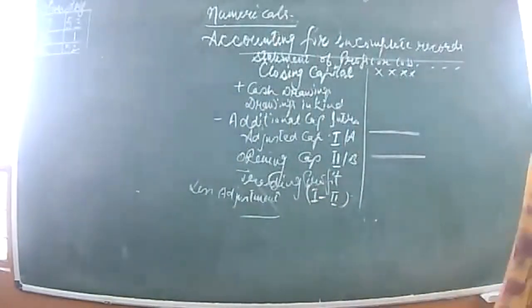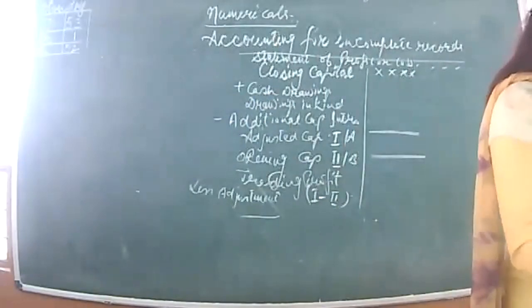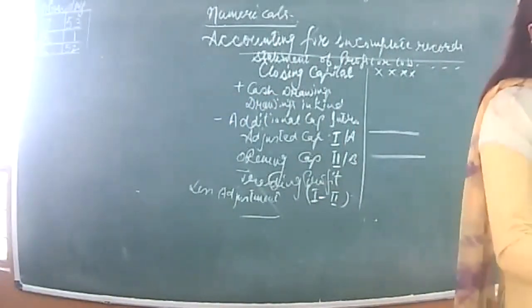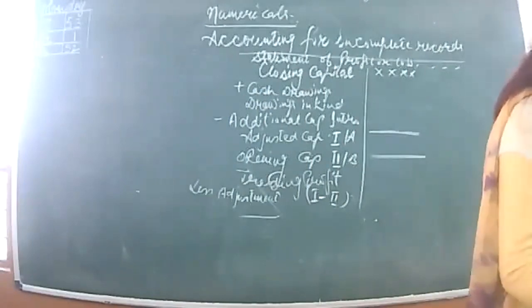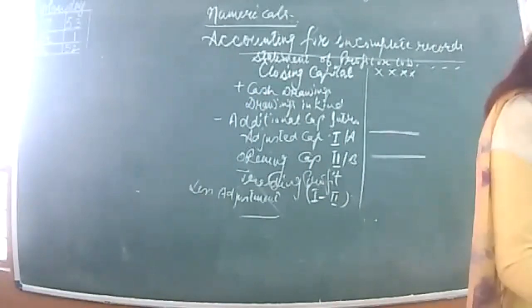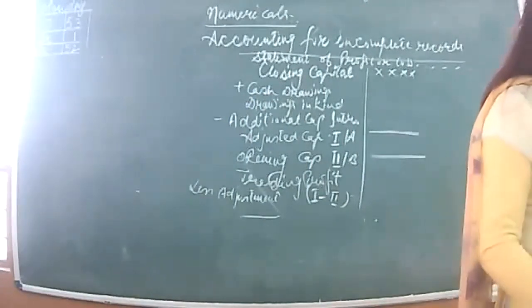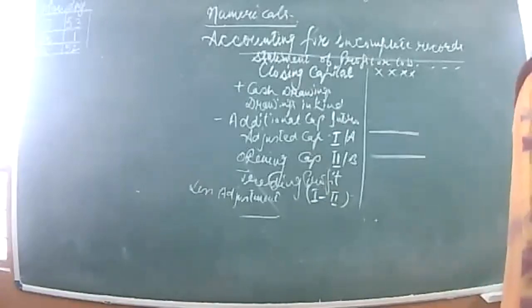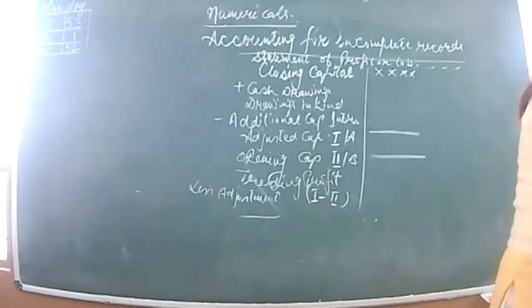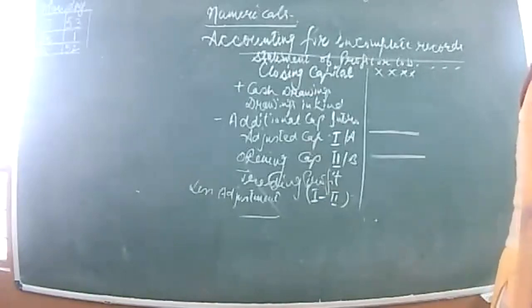Let's see back exercise questions - this is the last year we are doing this chapter in class. I will discuss the typical questions with you and the rest will be for your practice. I will discuss questions on single entry system where financial position opening or closing statement of affairs may be given. When neither opening nor closing capital is directly given, I will calculate both opening capital and closing capital.